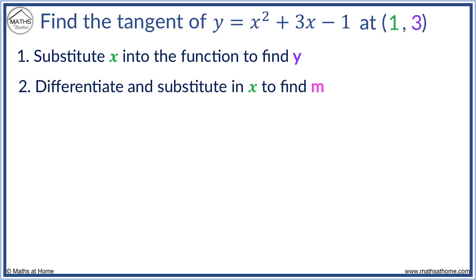Step 2 is to differentiate and sub in x to find m. We differentiate y equals x squared plus 3x minus 1 to get dy/dx equals 2x plus 3. We now sub x equals 1 into 2x plus 3 to find the gradient of the tangent. m equals 5.